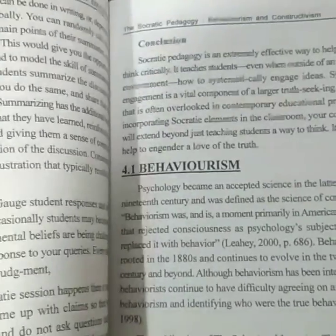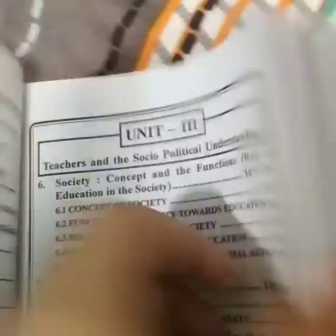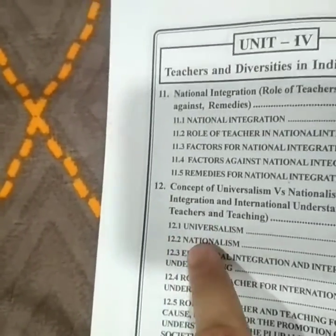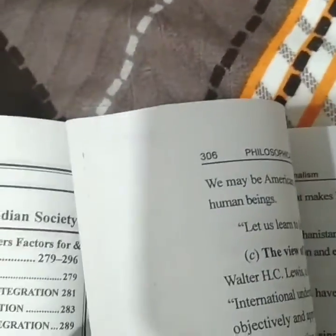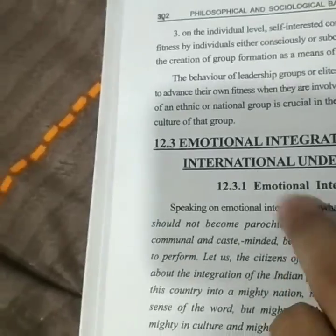The topic 'Behaviouralism' is indeed on page 119. Lastly, I'll check something from Unit 4 — 'Emotional Integration' is listed on page 302. Let's check — yes, on page 302, 'Emotional Integration' is there. So clearly this book is very good, and the page numbers are accurately listed.